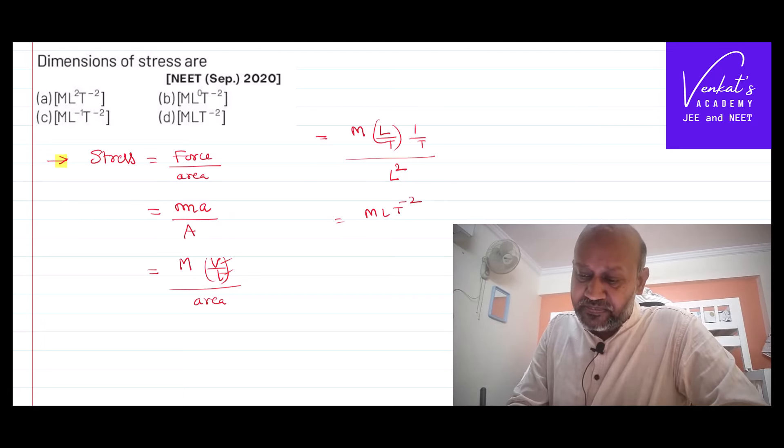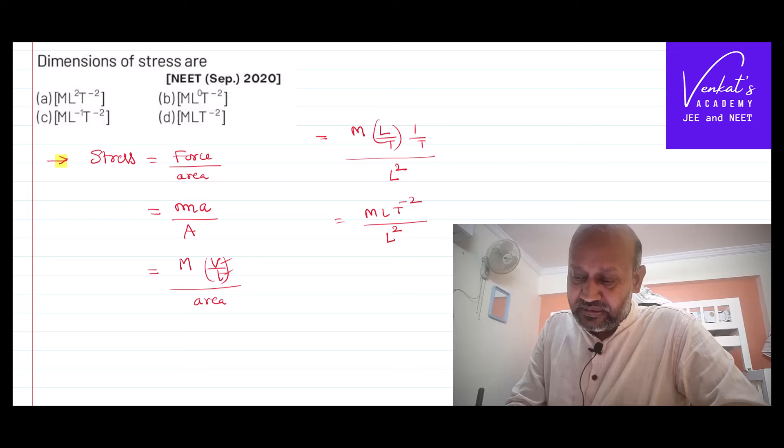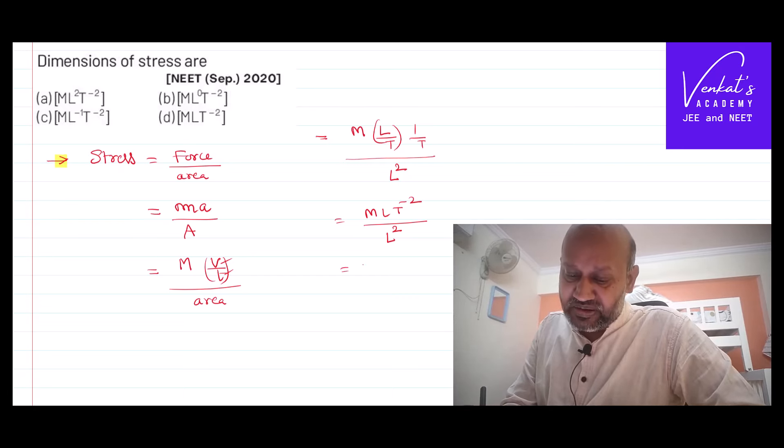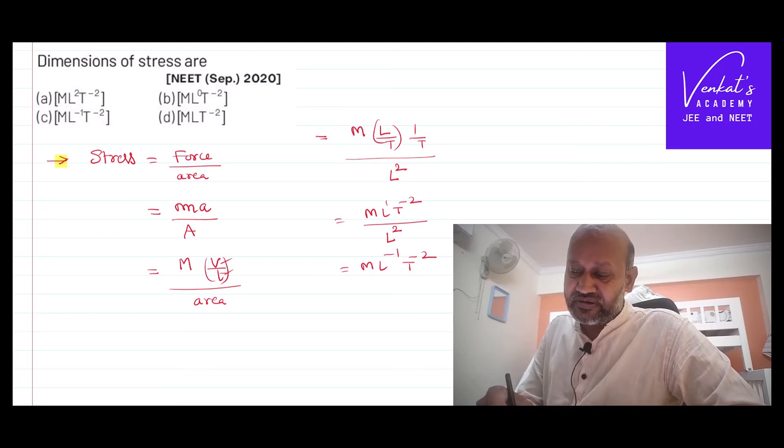By area that is L square, so L square. Further it becomes M L power plus 1 and minus 2 becomes L power minus 1 T power minus 2. That's the dimensions of stress.